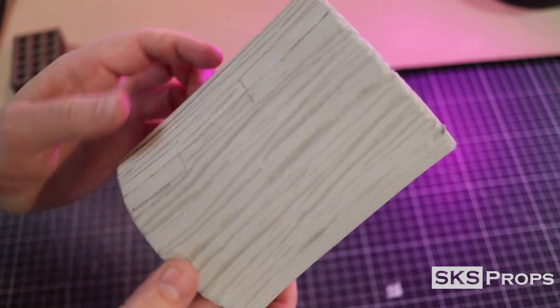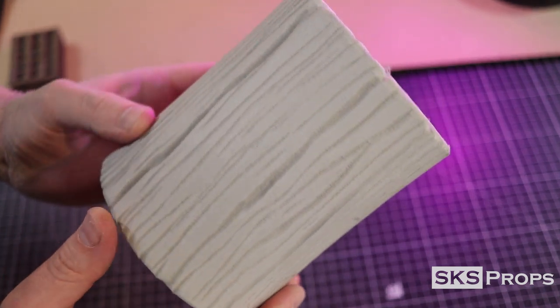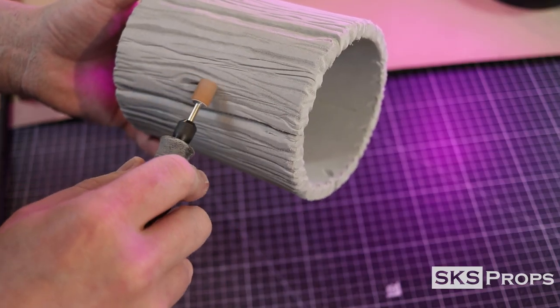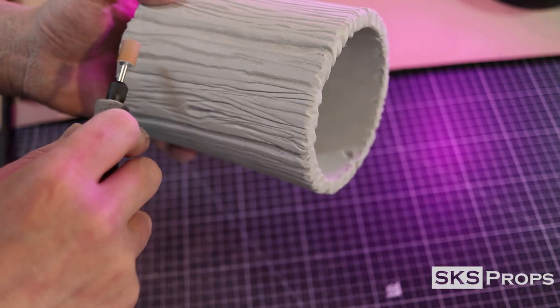It's looking pretty good, but I want some of these lines to be a little bit sharper, so I switch over to a stone bit. This will allow me to really cut into the foam, but keep the lines extremely crisp.